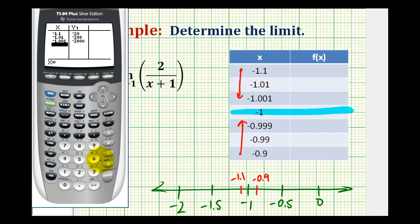Let's go ahead and type in negative 1, even though we know this function is undefined at negative 1, the calculator will give us an error. We have negative 0.999, negative 0.99, and then negative 0.9.